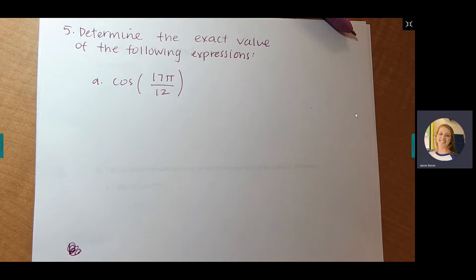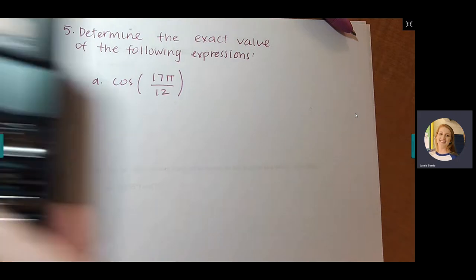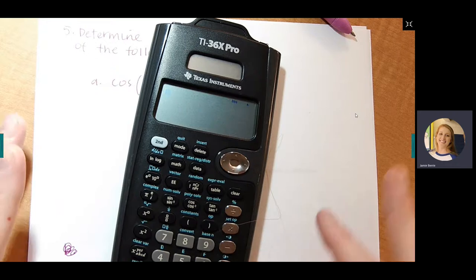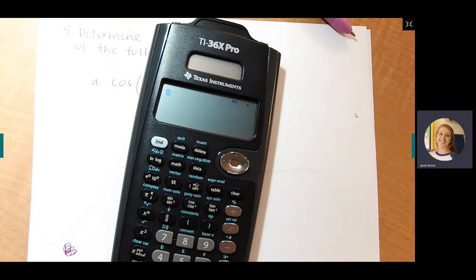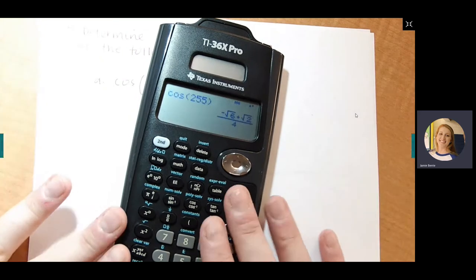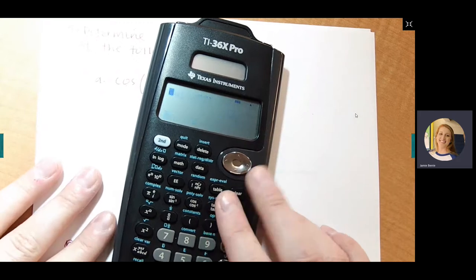So today we are finishing up Section 8.3. Number 5 is probably the hardest of the problems we have left, but if you have this calculator, they're going to be super easy. Any time you have to find exact values for trig functions, this calculator is super helpful because it can give you answers in terms of radicals.